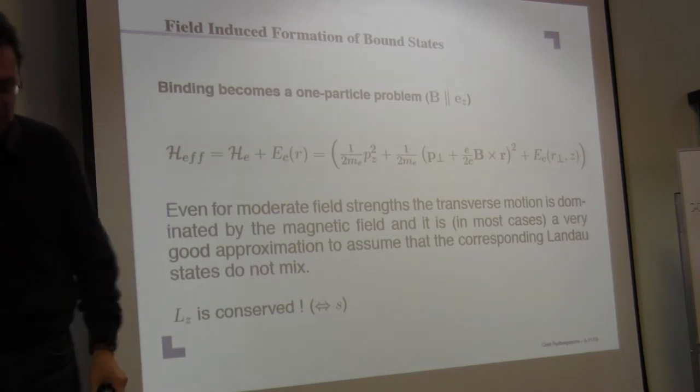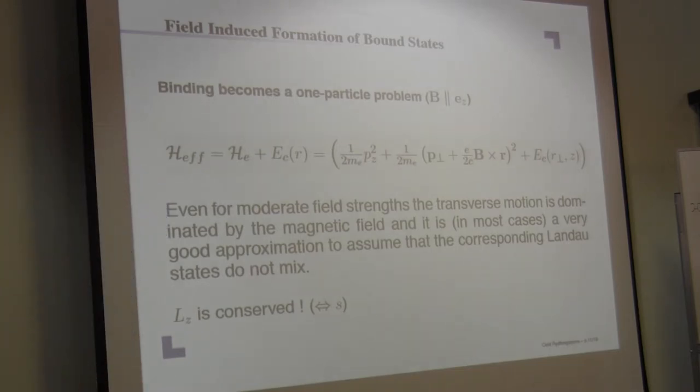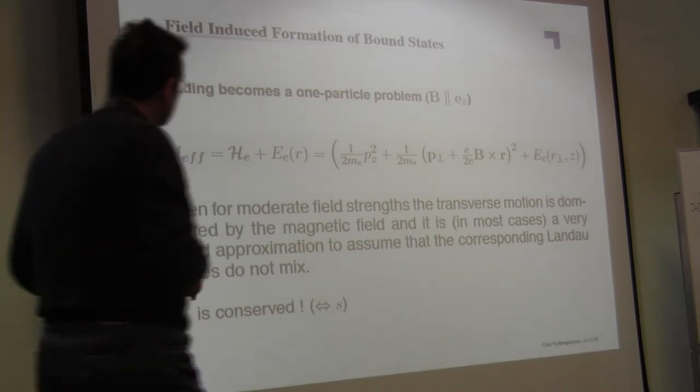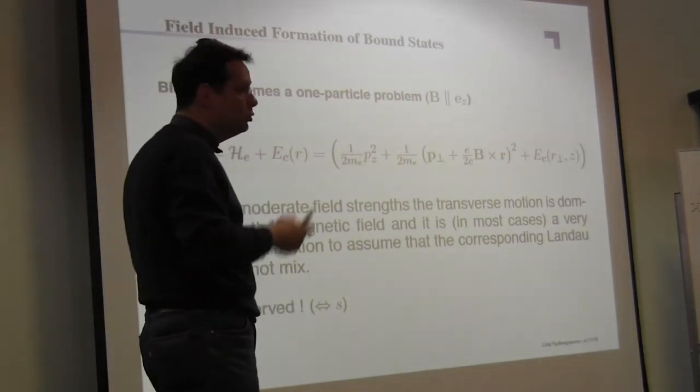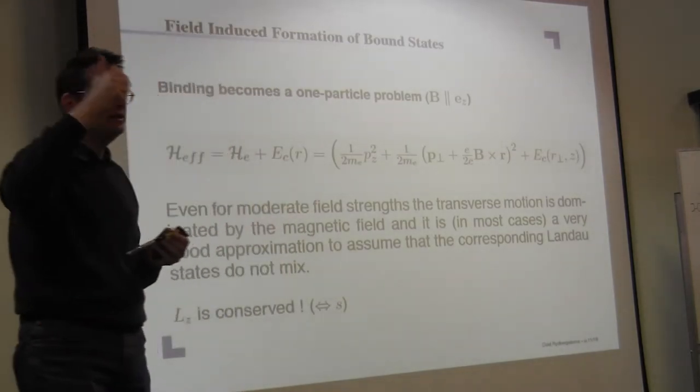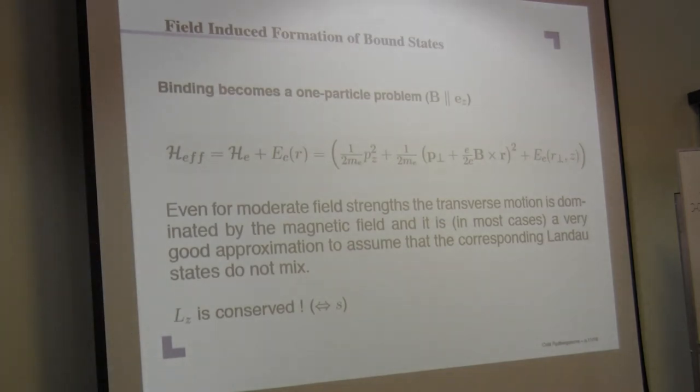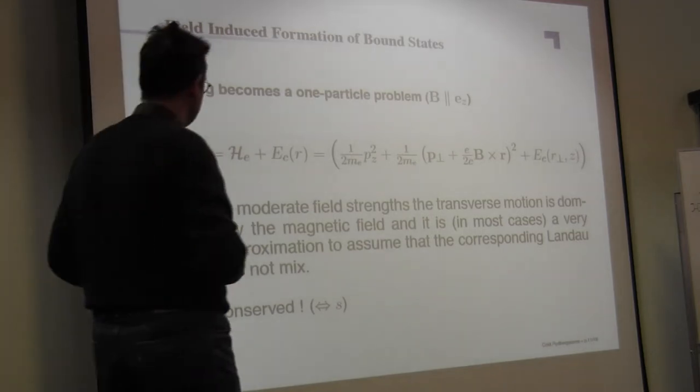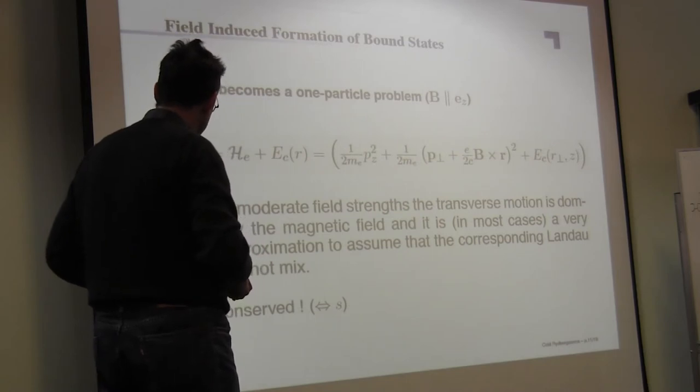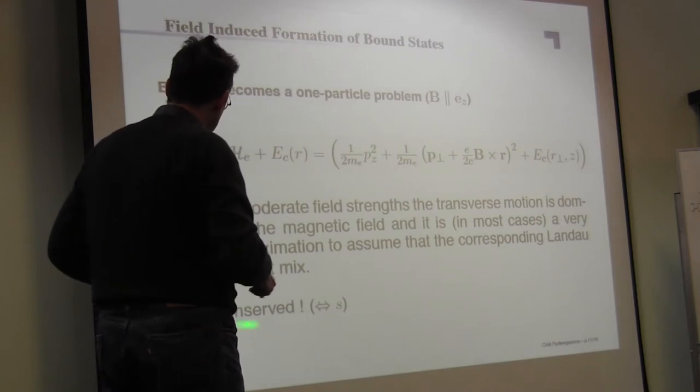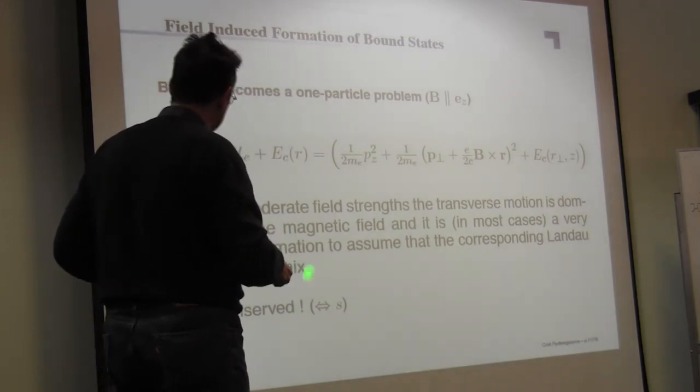Now in lowest order, you can describe this simply as a Landau orbital, which is the solution of a free charged particle in a magnetic field. So these Landau orbitals have two quantum numbers: the principal Landau quantum number and the angular momentum quantum number.